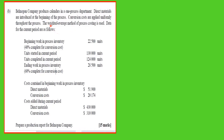The weighted average method being used tells us that we can lump everything together and find an average cost. If we were using FIFO, the order in which the units go into production would be significant, and we would have to keep them in their respective periods.